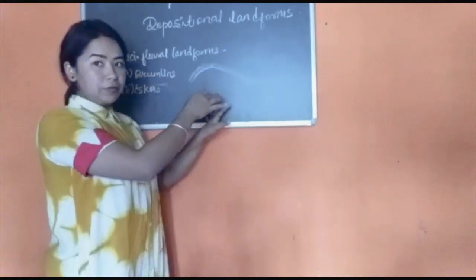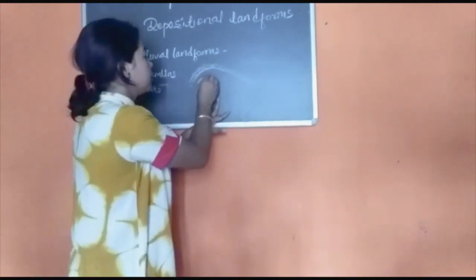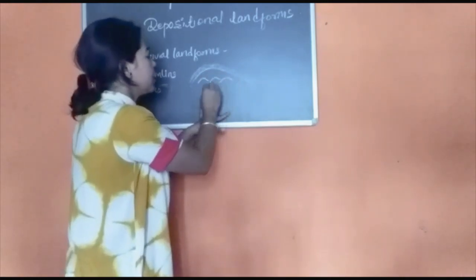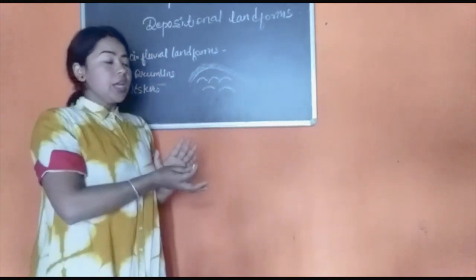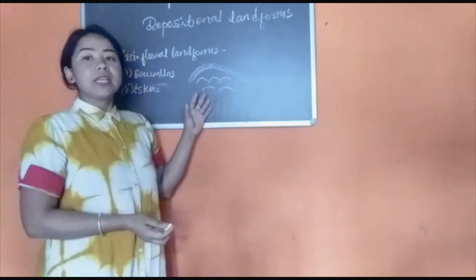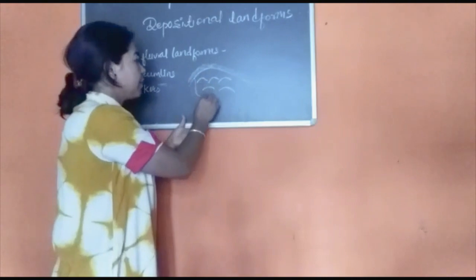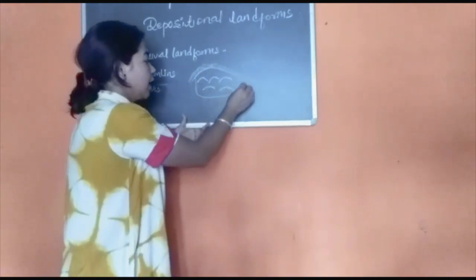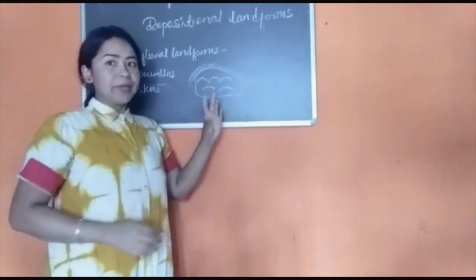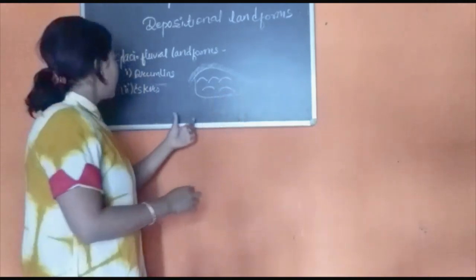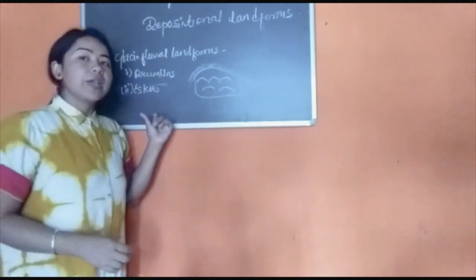When this type of drumlin occurs in a large group — one drumlin, two drumlins, three drumlins, and many more together — they look like a basket of egg topography. This grouping is also known as basket of egg topography. Next is an esker. Eskers are long, narrow, winding wall-like structures formed by the deposition of sand and gravel brought down by glaciers.